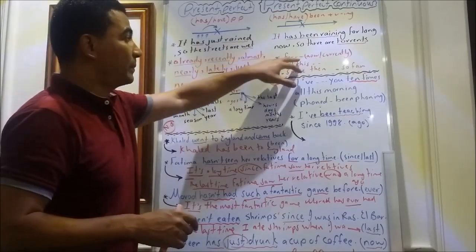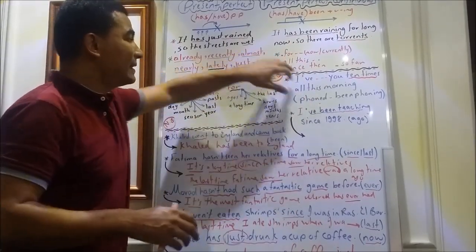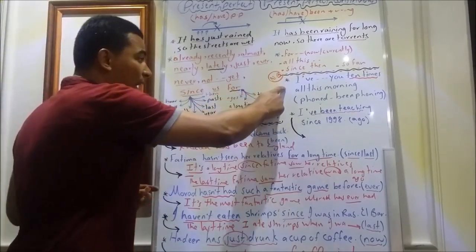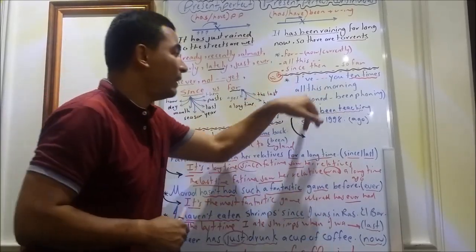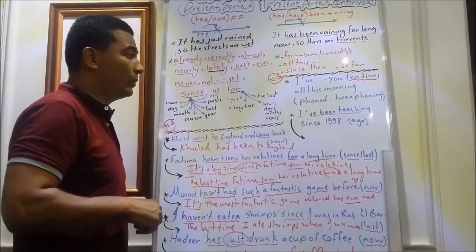The signs for plus period of time: now, from, currently, all this plus period of time, since, then, or so far. If I have this example, I've phoned you ten times all this morning. In this sentence, I have found all this morning, which is the sign for present perfect continuous.